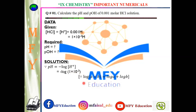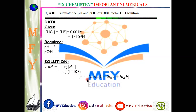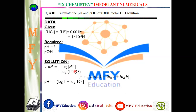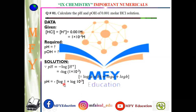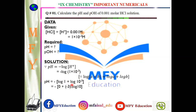उसके बाद — log(A × B) = log A + log B। यहाँ पर simple formula है: अगर दो numbers multiply हो रहे हैं और log apply हो रहा है, तो दोनों पे log अलग apply होगा और दोनों add हो जाएंगे। अगर log apply करें A और B पर, तो क्या होगा — log 1 + log 10⁻³। और log A की power B = B × log A, तो power नीचे आजाएगी — minus 3।